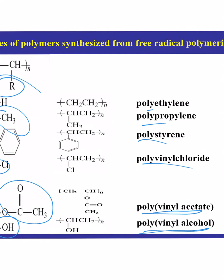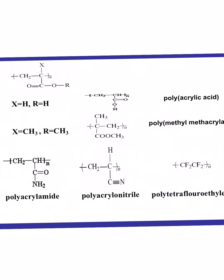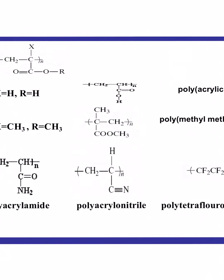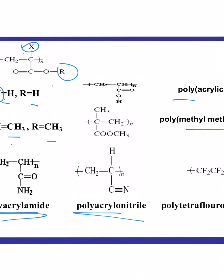More exotic examples: we also have polyacrylic acid, where X is hydrogen and R gives us other species. When X is CH3 and R is CH3, you have polymethylmethacrylate. We also have polyacrylamide — a useful adhesive — polyacrylonitrile, and polytetrafluoroethylene. All these examples start with a double bond between two carbon atoms; in PTFE, instead of hydrogens all around, we have fluorines all around. Same process.